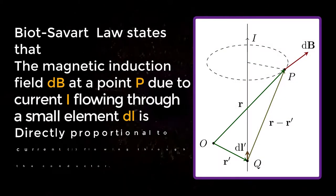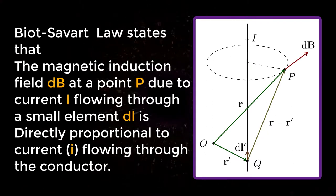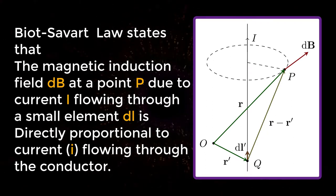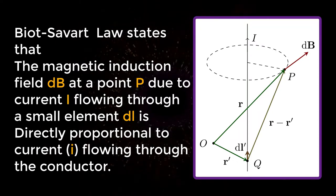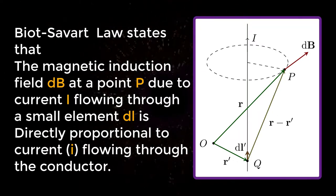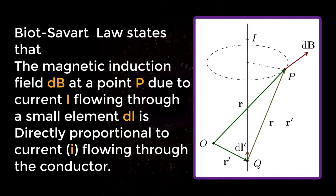So, Biot-Savart law states that the magnetic induction field dB at a point P due to the current I flowing through a small element dl is directly proportional to the current I flowing through the conductor.